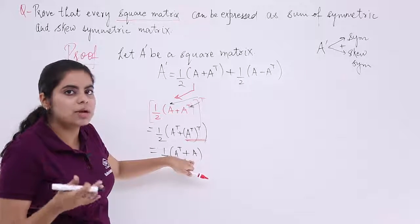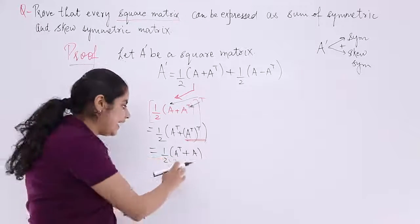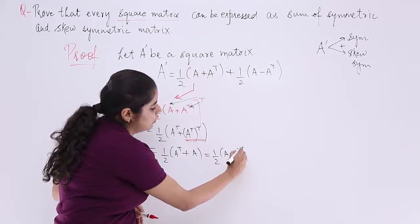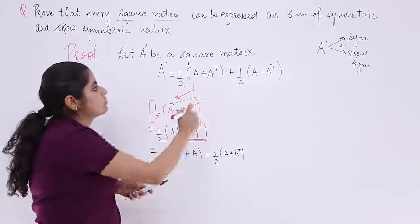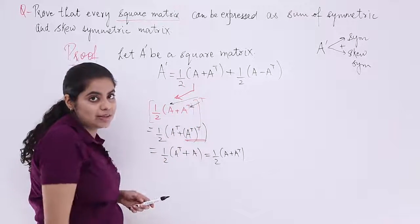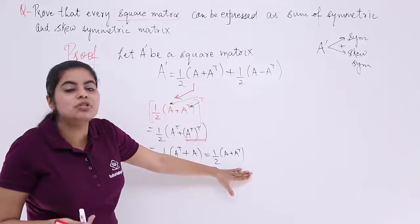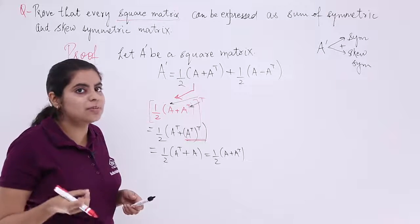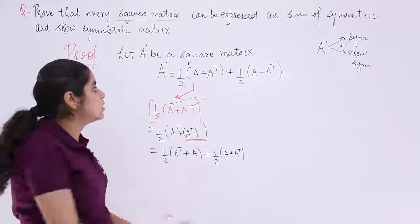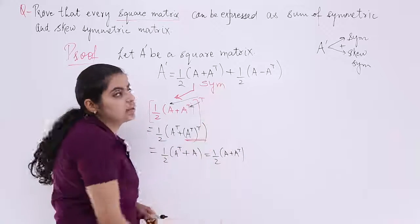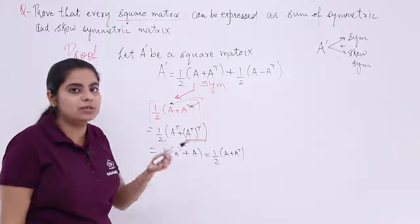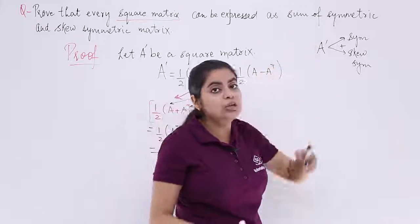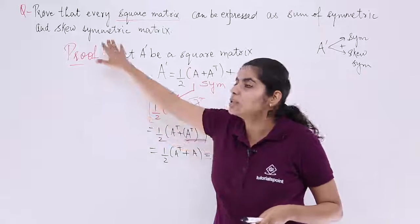Now, Aᵀ + A is the same as A + Aᵀ by commutativity of addition. So we started with half into (A + Aᵀ) and obtained the same expression upon taking the transpose. That means even if you take the transpose of this matrix, you get the same matrix — so this first factor is symmetric, because a symmetric matrix means Aᵀ = A. We now need to check whether the second factor is skew symmetric.